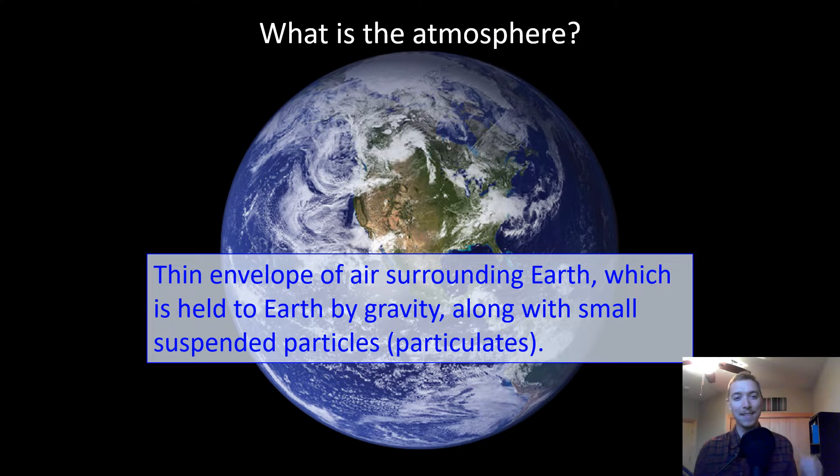What is the atmosphere? It is a thin envelope of air surrounding the Earth, which is held to Earth by gravity along with small suspended particulates. This envelope of gas is roughly 480 kilometers high. There really is no top to the atmosphere. There have been five distinct layers that have been identified using thermal characteristics, chemical composition, movement of air parcels, and density. We're going to focus on four of them in today's lecture.